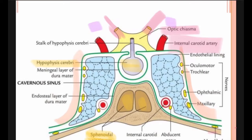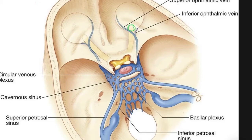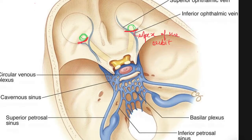The anterior relation: anteriorly, the superior orbital fissure is present and the apex of the orbit. This is the anterior fissure where nerves come out of the apex of the orbit, which is marked in red.